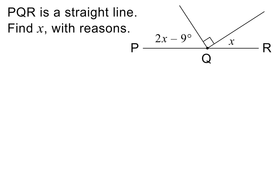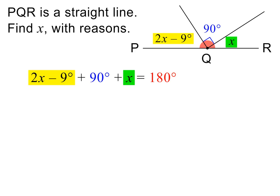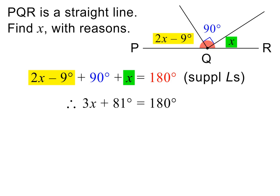Here is the next question. Please pause to read it. This right angle symbol tells us that we have a 90 degree angle in the middle. And because we again have adjacent angles on a straight line, we can write the following, and the reason is supplementary angles. We then add like terms on the left, giving us 3X plus 81 degrees equals 180 degrees. To isolate the term with X, we subtract 81 degrees from both sides. And to isolate X, we divide both sides by 3. Please pause to check my working.